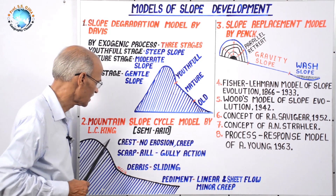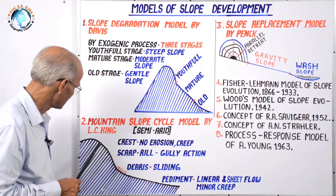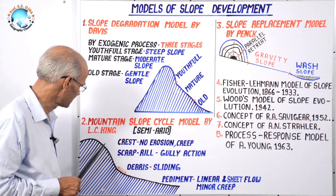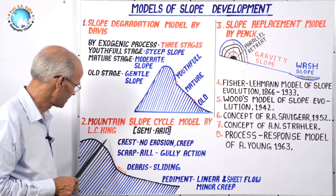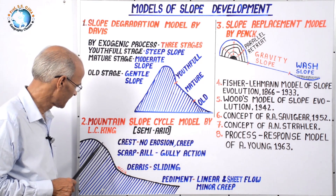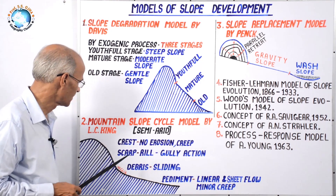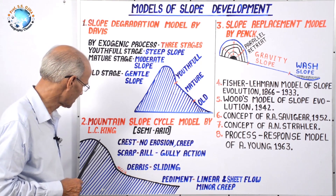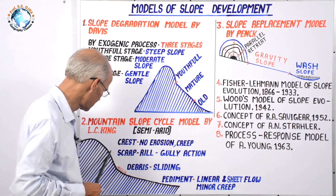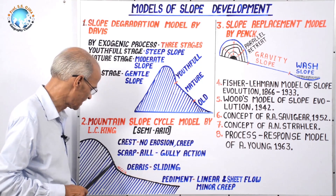On the crest or top of the hill in semi-arid regions, there is no significant erosion; instead, creep occurs. This is because rainfall is very scarce, so through thermal weathering the material is broken down and slides down according to the gravity slope — this process is called creep and is the main process on hilltops.